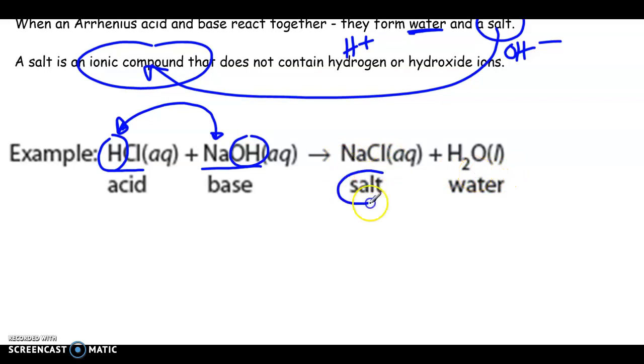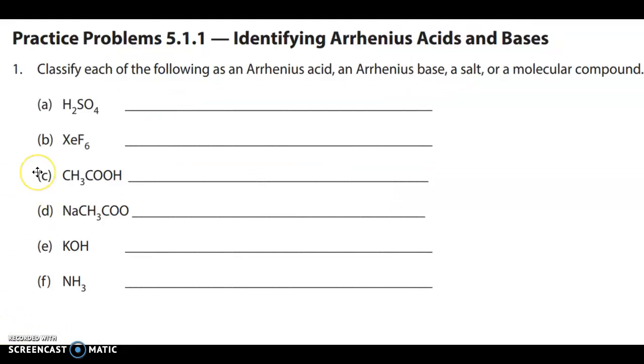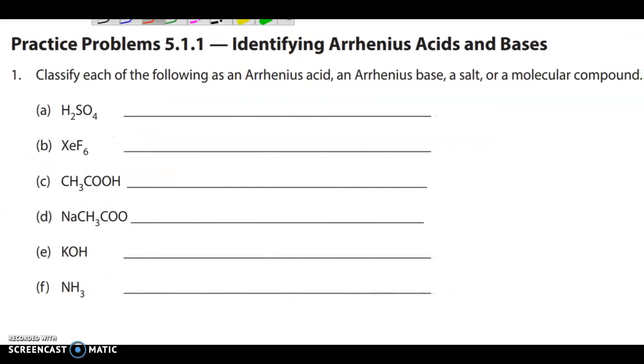Okay, so salt, again, this is an ionic compound that does not have hydrogen or hydroxide. And that's really what we're looking at here. Okay, so let's take a look here. So the first problem is basically looking at which of the following is an Arrhenius acid.